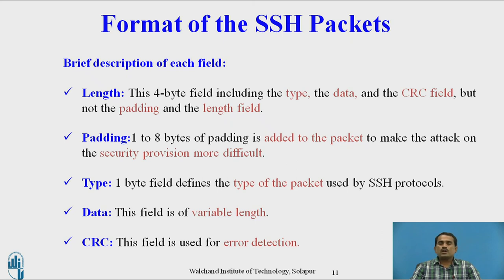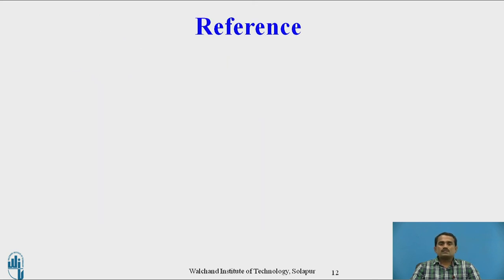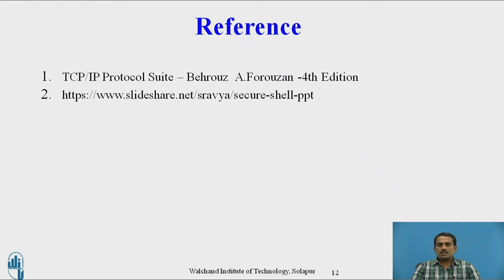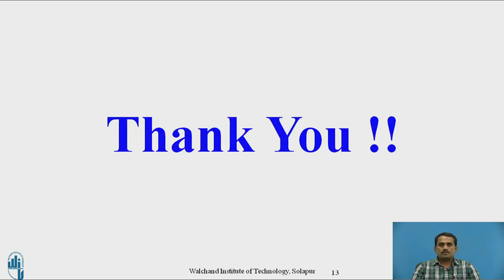In overall, Secure Shell is used for transmitting data from one user to another using different protocols. As compared to Telnet and TCP/UDP, SSH provides more security. As the name itself indicates — Secure Shell — SSH is used for secure data transmission. These are the two references used for preparing this presentation. Thank you.